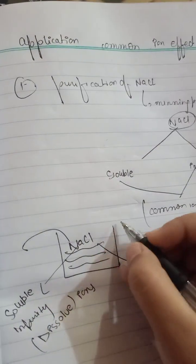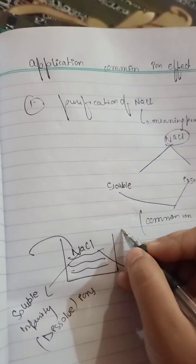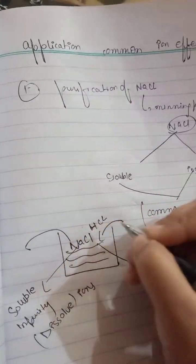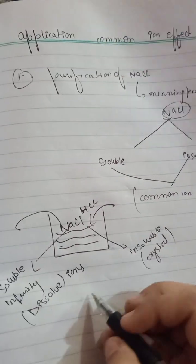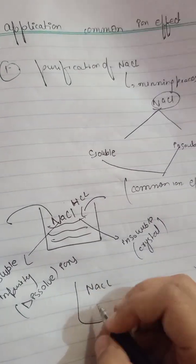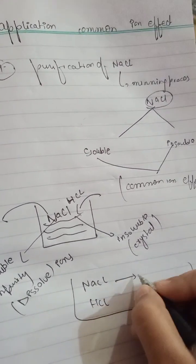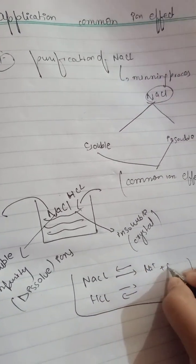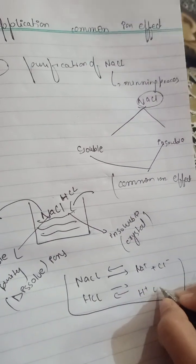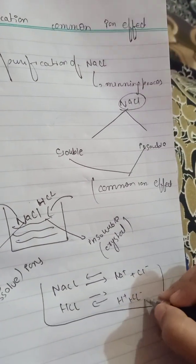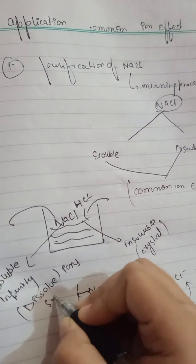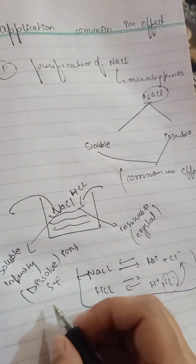We have to filter out the insoluble impurity. We will add HCl to ionize the solution. For example, we have NaCl in the container and we add HCl to it. So here the solution is formed. The chlorine ion will be suppressed because HCl is a strong electrolyte, producing more ionization and more chlorine ions.